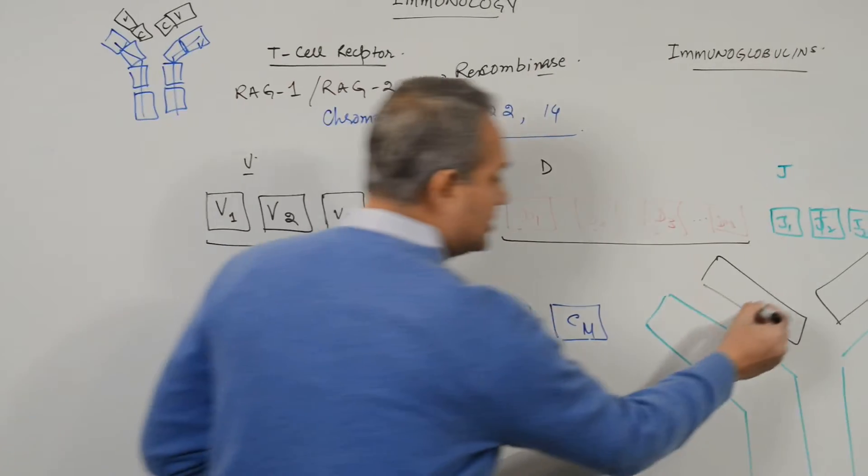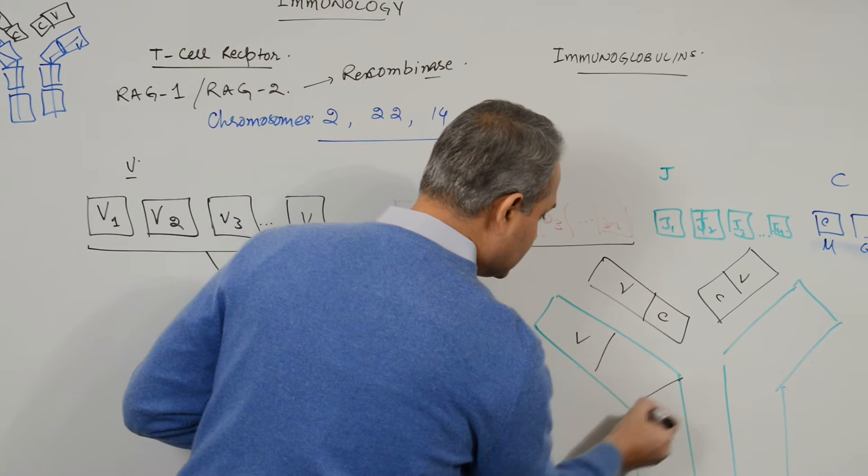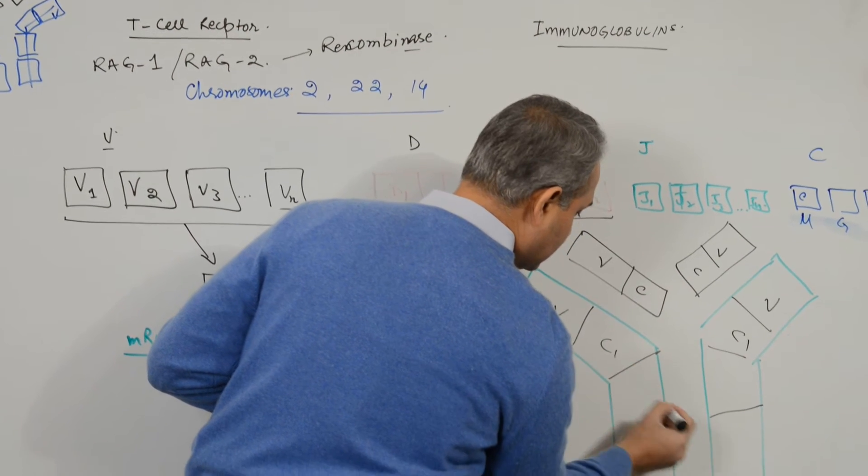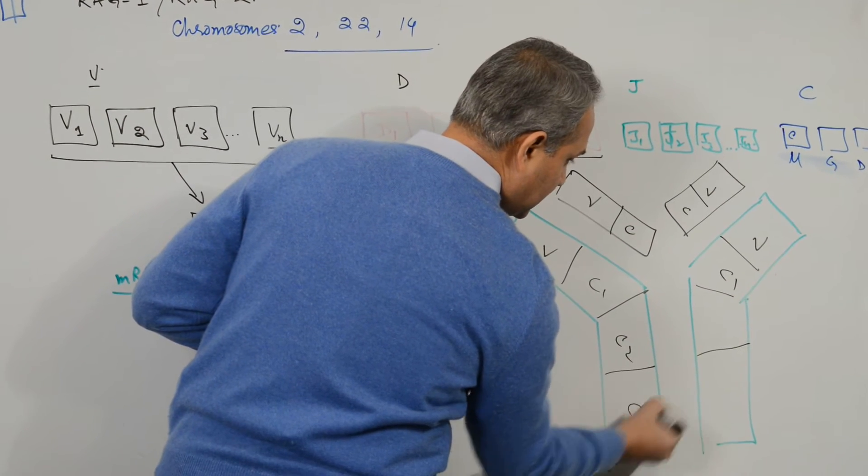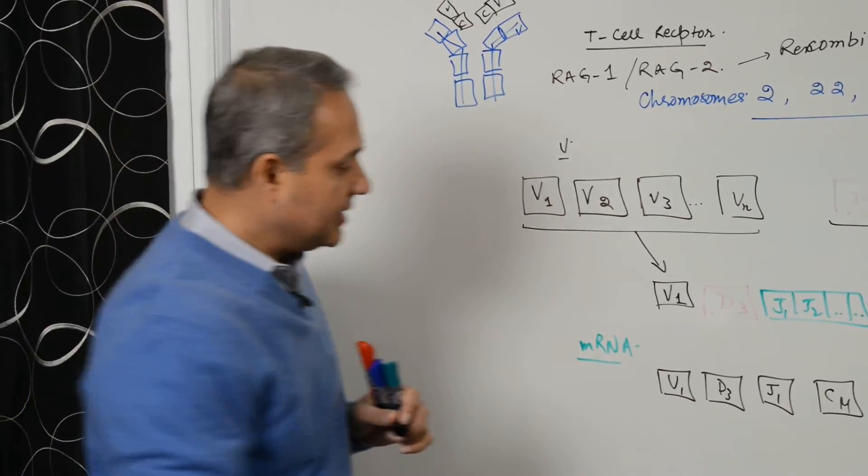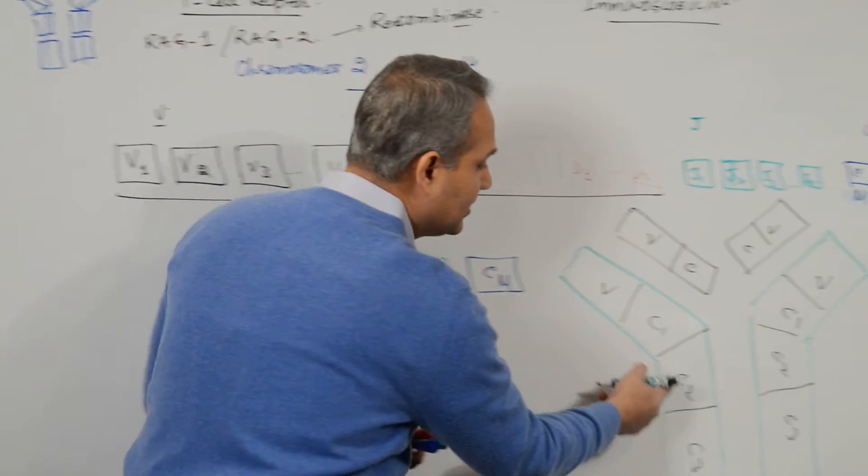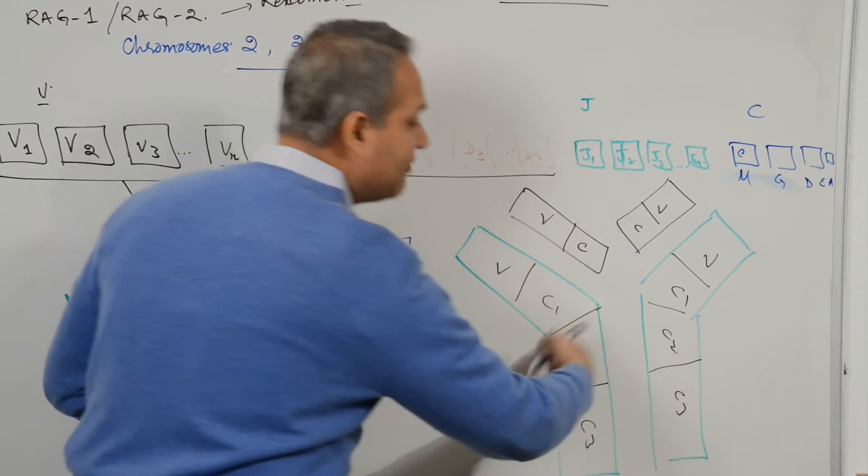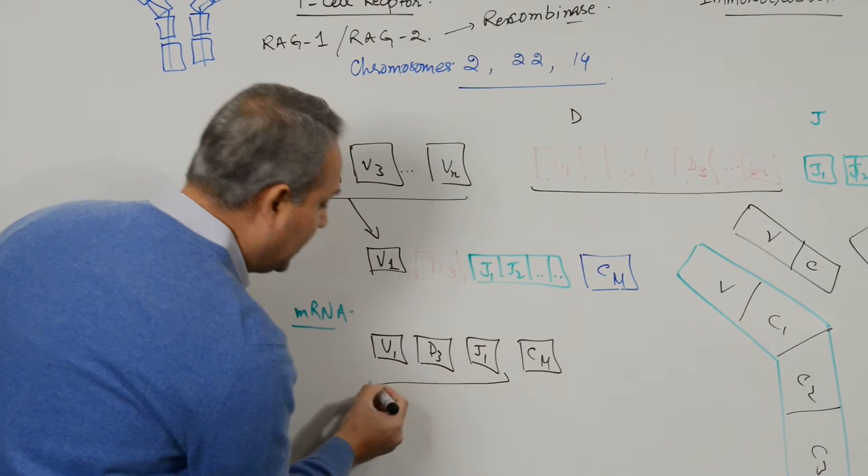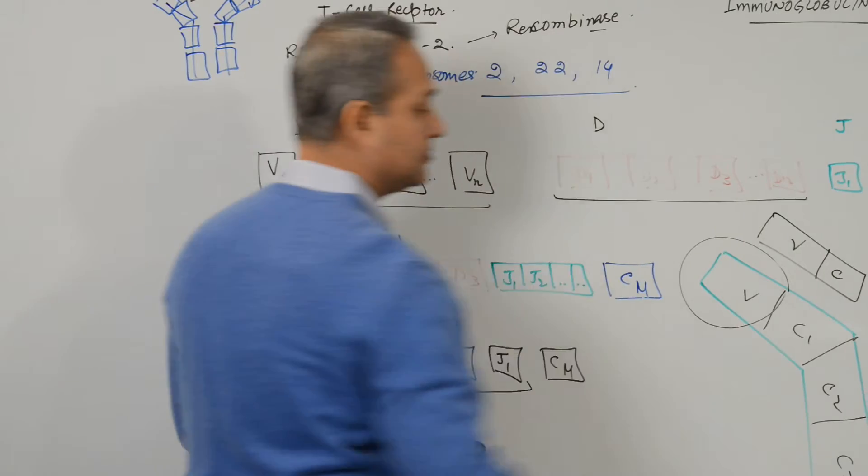The variable regions, constant regions. Variable constant, constant 1, constant 2 and constant 3. In this immunoglobulin, the mu here, now connect the dots, the mu here is going to take part and make the heavy chain, while the V, D, and J are going to make the variable portion of the heavy chain.